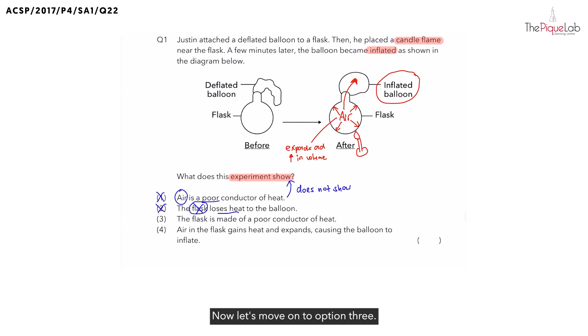Now let's move on to option three. They said that the flask is a poor conductor of heat. Is that true? Let's recall what are flasks usually made of? They are usually made of glass. And is glass a poor conductor of heat? Definitely. But can we tell from the experiment above? No. So this is very similar to option one, where the experiment does not show that the flask is made of a poor conductor of heat. Therefore, can we choose option three? No. So let's cross it out.